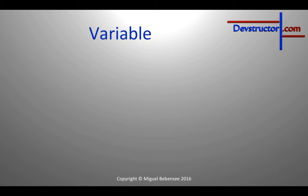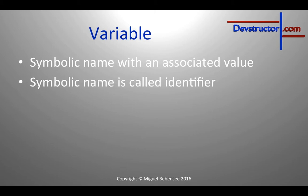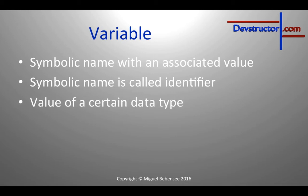Basically a variable is a symbolic name with an associated value. This symbolic name is called an identifier, and the value has to be of a certain data type.